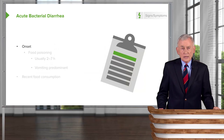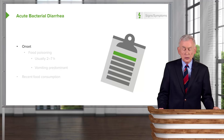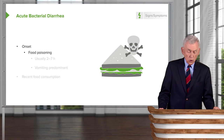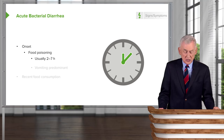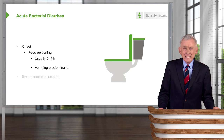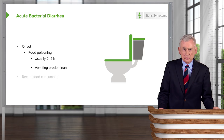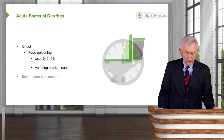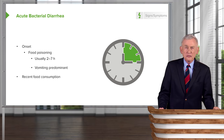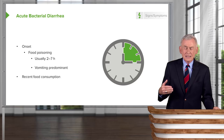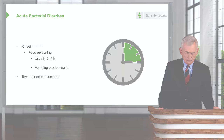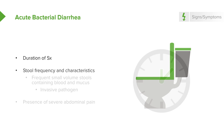To figure out the cause of diarrhea, it's useful to know about the onset. Food poisoning usually comes on pretty rapidly, within two to seven hours, and vomiting is predominant. The classic and perhaps most rapid example is that caused by Staphylococcus — its enterotoxins act faster than almost any other form of food poisoning. We need to know about recent consumption of things that might contain Staphylococcus, like chocolate eclairs, mayonnaise, or chicken salad at picnics. We also need to know about stool frequency and characteristics.